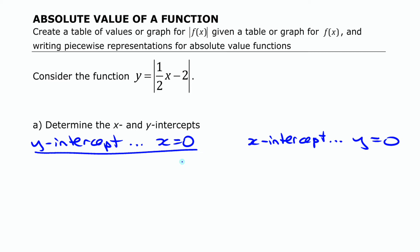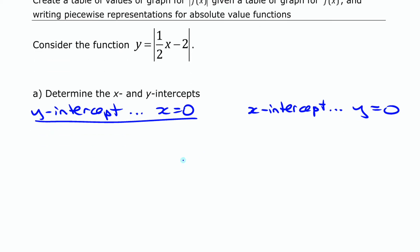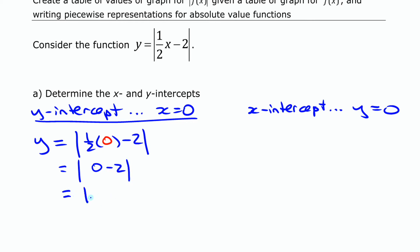Let's find the y-intercept first by substituting 0 in for x. We write: y equals the absolute value of ½ times 0 minus 2. Half times 0 is just 0, so we have the absolute value of 0 minus 2, which is the absolute value of negative 2, and that equals 2. So our y-intercept of the absolute value function is 2.